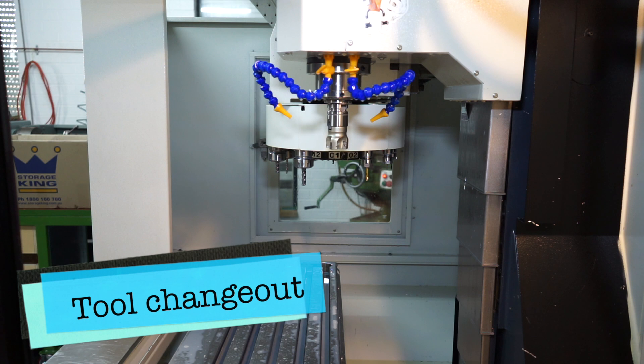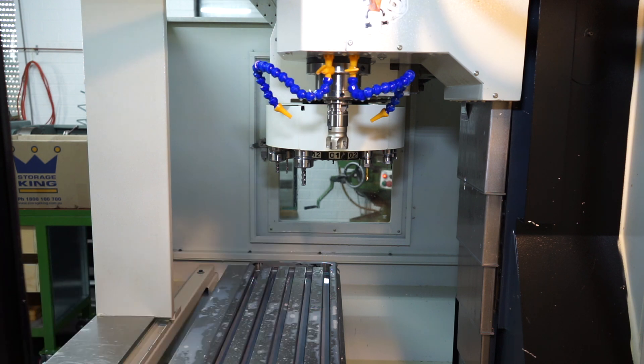So now it's time to actually pull out the tools out of the carousel. So I need to pull out tools one, two, three, four, five, and six. Well actually tool one will stay.